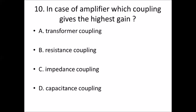Tenth bit: In case of amplifier, which coupling gives the highest gain? Option A, transformer coupling. Option B, resistance coupling. Option C, impedance coupling. Option D, capacitance coupling. Answer is Option A, transformer coupling.